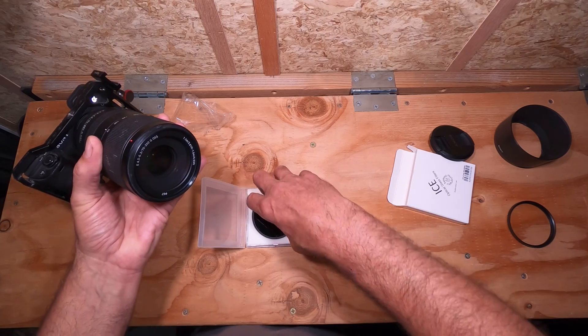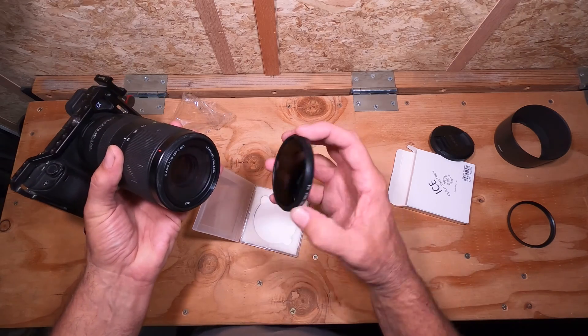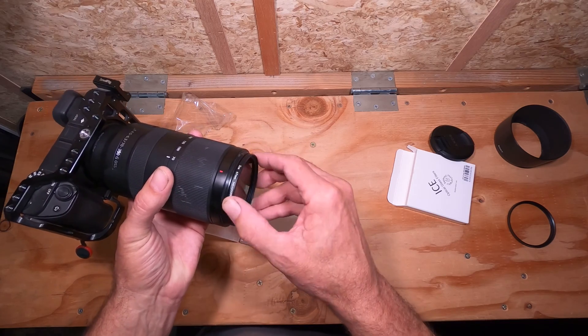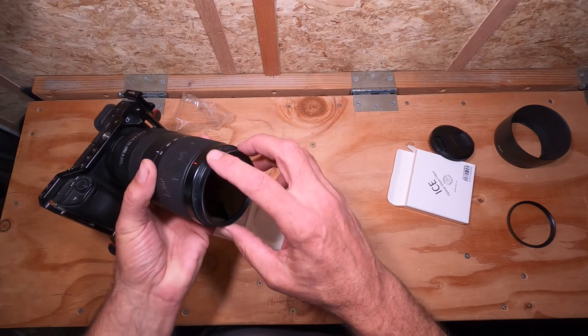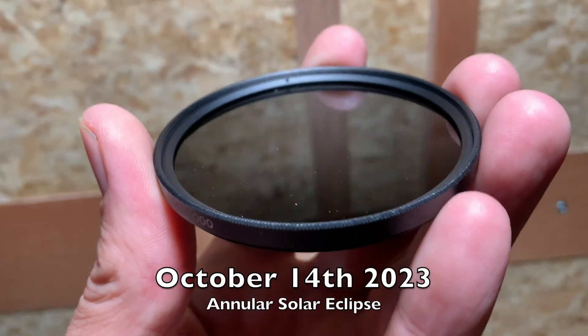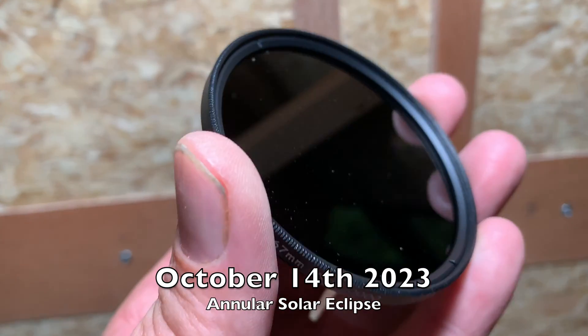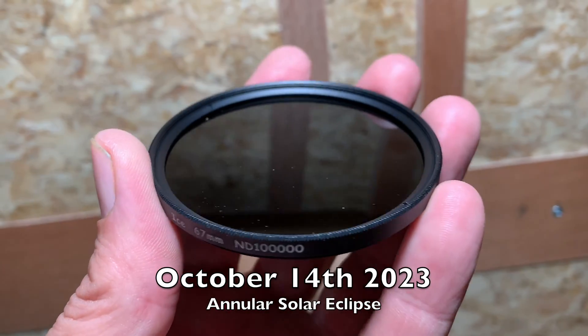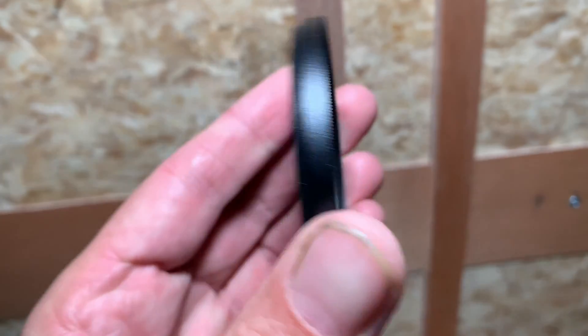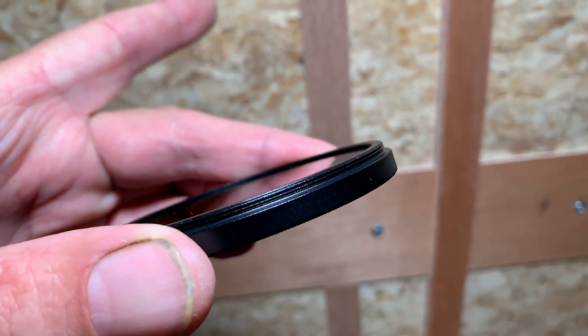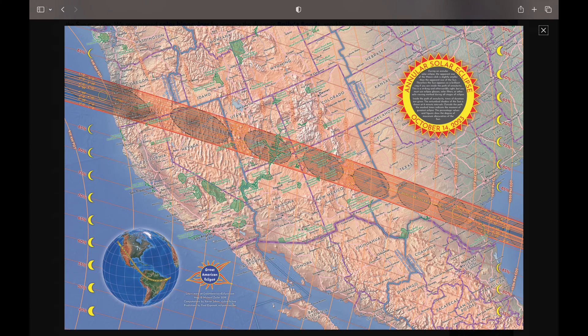So why would I want an ND filter that is so dark? Well, next month is an eclipse. Today is September 22nd and October 14th I believe is an eclipse that will be crossing the United States. It will be crossing Utah.